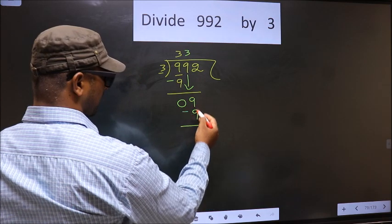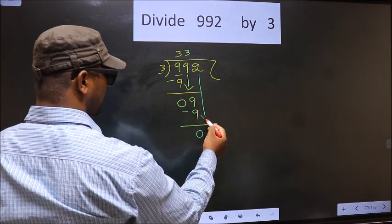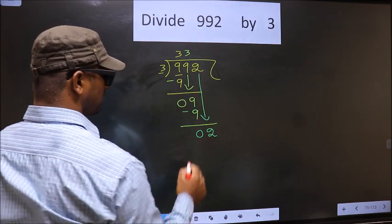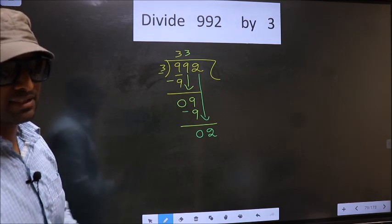Now you subtract. 9 minus 9, 0. Now you bring down beside number. So 2 down. This is where the mistake happens. And the mistake is this.